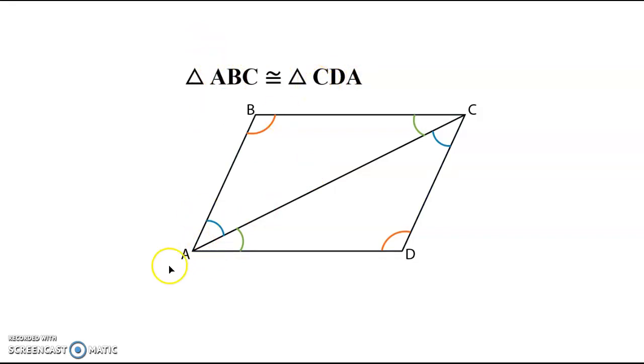It turns out angle ABC, this orange one, is actually congruent to angle CDA. So we want the B and the D to be in the same place. And you can see ABC is in the same position as CDA - that's how this works.